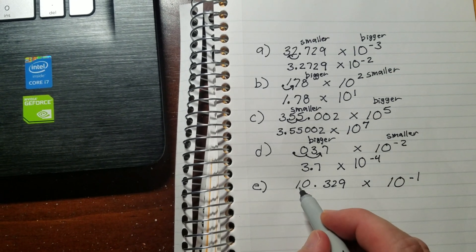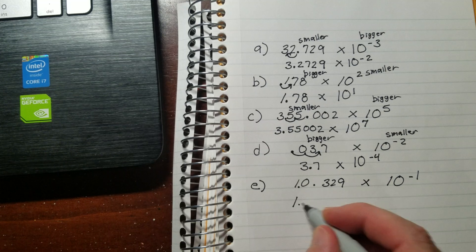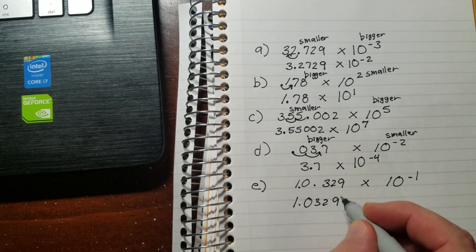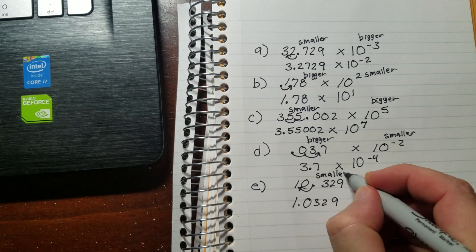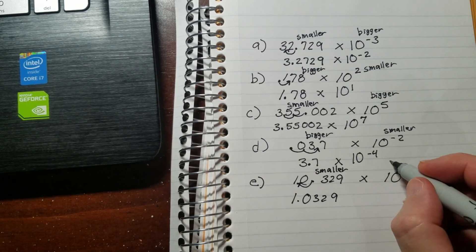And the final one, I just need to move it one place over here. So I have 1.0329. I moved it one place to make it actually smaller, which means this number over here is going to have to be bigger.